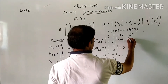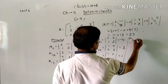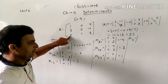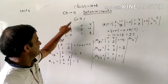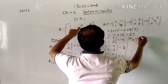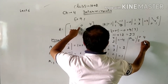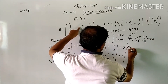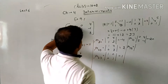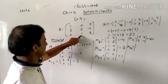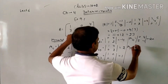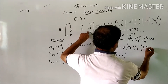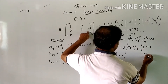Now M31: element at position 3,1 is 0. Deleting its row and column leaves [0, 4; 5, -1]. Product gives 0 - 20 = -20. And M32: element is 1, deleting gives [1, 4; 3, -1], giving 1×(-1) - 4×3 = -1 - 12 = -13.